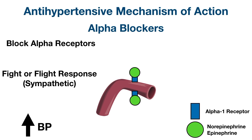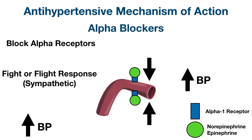Norepinephrine has a higher affinity compared to epinephrine, but both can bind to and activate alpha-1 receptors. Activation of these receptors on blood vessels causes vascular smooth muscle contraction and vasoconstriction, leading to an increase in blood pressure. Alpha blockers lower blood pressure primarily by blocking this sympathetic activation of alpha-1 receptors on blood vessels.